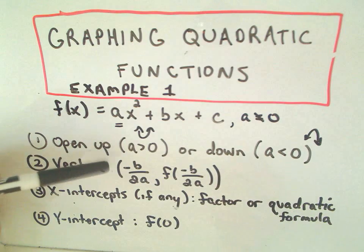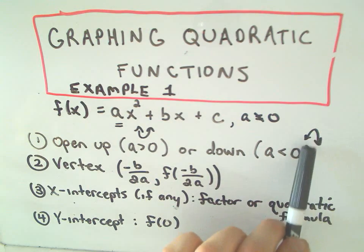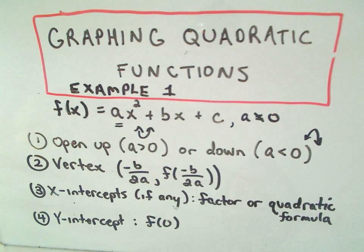Recall that your parabola will open upwards if the a value's positive, and it'll open downwards if the a value's negative. To find the vertex, which will either be the highest point on the parabola or the lowest point on the parabola,